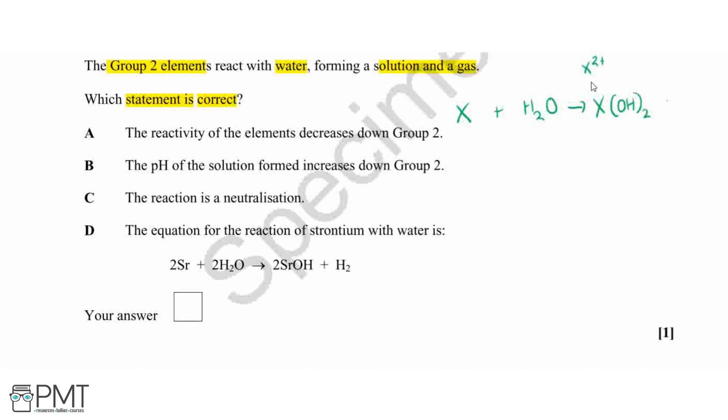And then the gas which we're going to form is going to be hydrogen gas. So therefore to balance this, we would need to put a big two in front of our water so that we have all of our elements balanced out. So let's work through these statements now and see which of these could be correct.